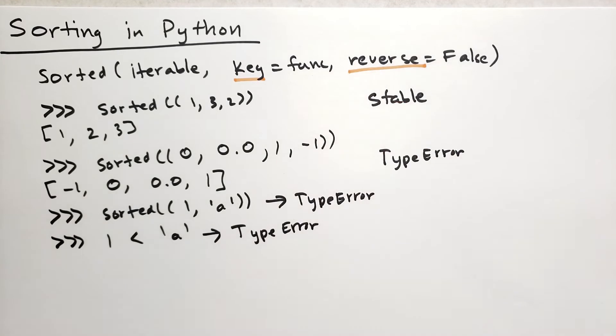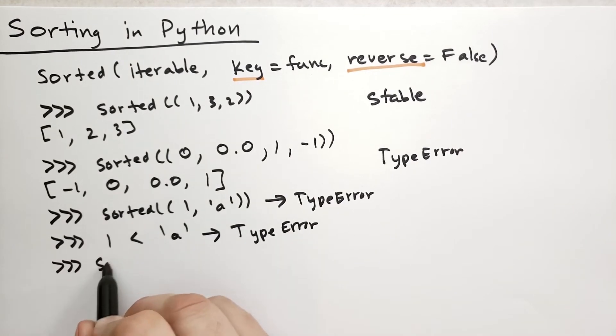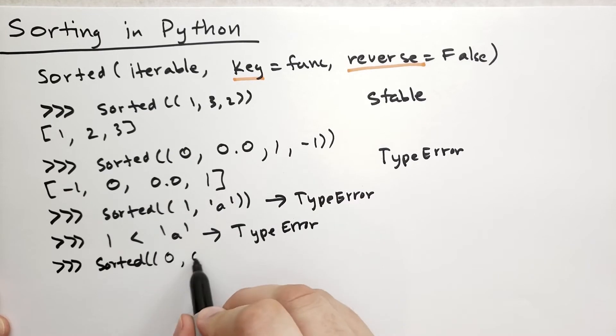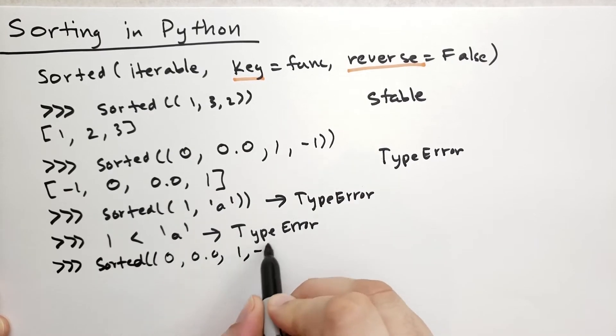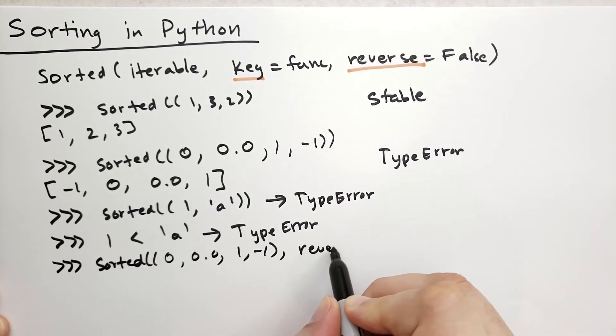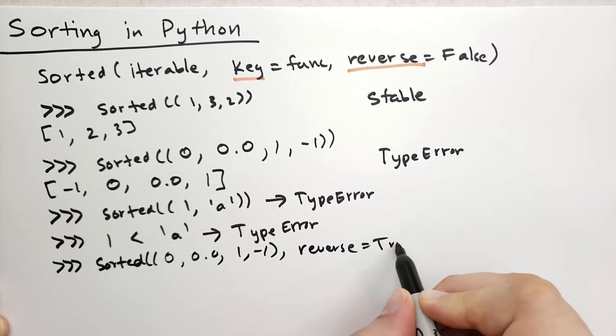There are two named parameters key and reverse and you have to specify these by name. The reverse parameter allows you to reverse the ordering. So let's say we wanted to sort in reverse - we say sorted, that list from above, and we're going to say reverse is equal to true.